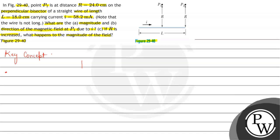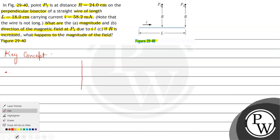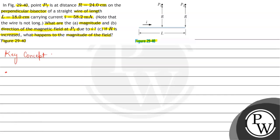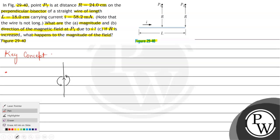Let's suppose we have a straight wire and a current is flowing in it. By the right hand thumb rule we can determine the direction of magnetic field. The right hand thumb rule says that when the thumb of the right hand is in the direction of current, then the curl of the fingers shows us the direction of magnetic field.